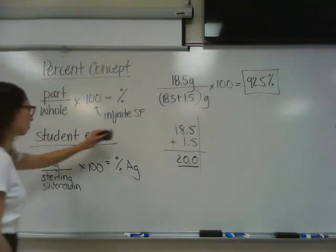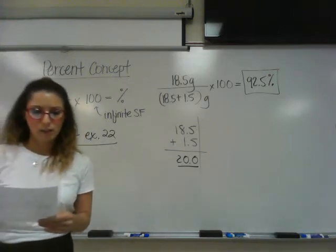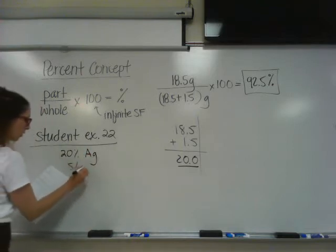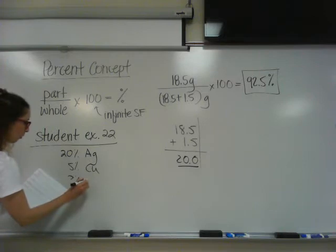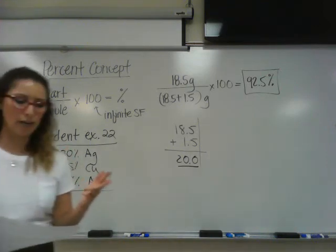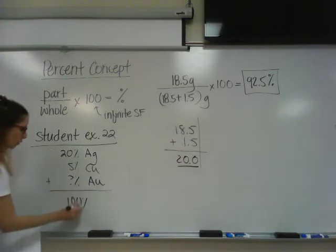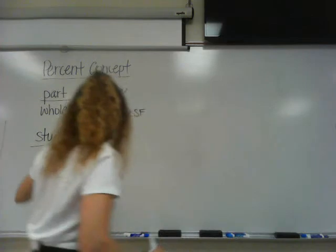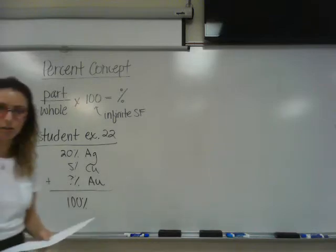Let's go on and do another one. Student exercise number 22. A gold alloy contains 20% silver and 5% copper. What's the symbol for copper? Cu. What is the percent of gold in the alloy? What's the symbol for gold? Au. If we have silver, copper, and gold in a gold alloy, it's a mixture of those three metals. Those percentages should add up to 100. So all of these should add up to 100%. So what do you think the percentage of gold will be? 75. Because 20 and 5 is 25%. So if you subtract 25% from 100, you're going to get 75% gold. And that's your answer.